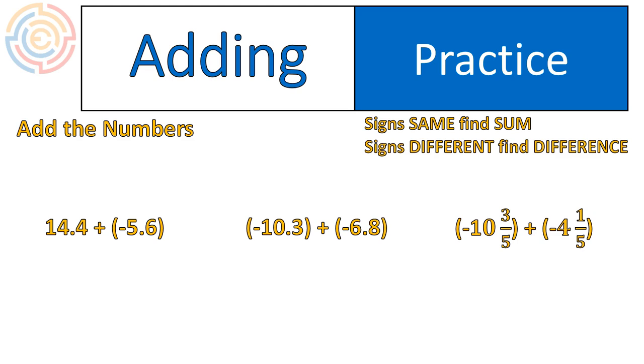14.4 plus negative 5.6. Before I even finish that question, I can know, is my answer going to be positive or negative? I look at the two numbers, 14.4 and 5.6. And I ask myself, which of those numbers is bigger, 14.4 or 5.6? Well, 14.4 is a larger number. So because the positive number is larger, the final answer is going to be positive. So I'll subtract those two numbers, 14.4 minus 5.6.